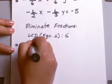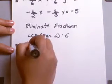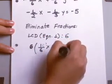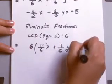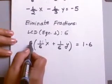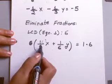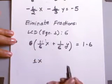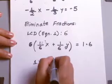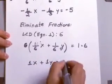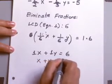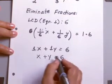We take that least common denominator and multiply both sides of the equation by 6. When you multiply both sides by 6: 6 times 1/6 gives you 1, so that gives you x. 6 times 1/6 y gives you y. And 1 times 6 on the other side gives you 6. So we end up with x plus y equals 6 as our first equation.